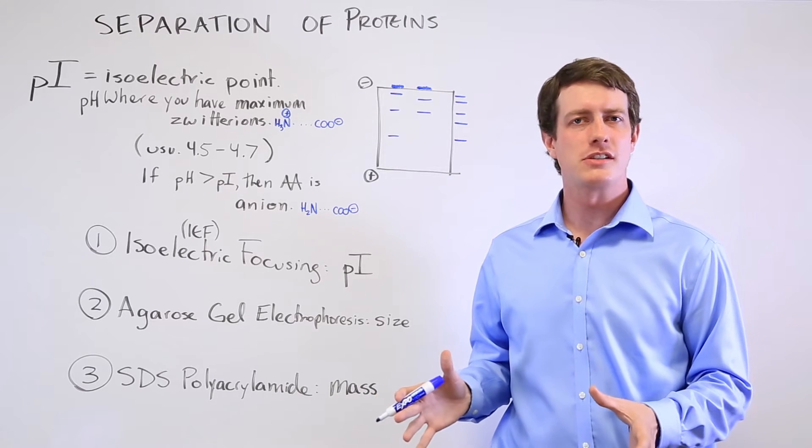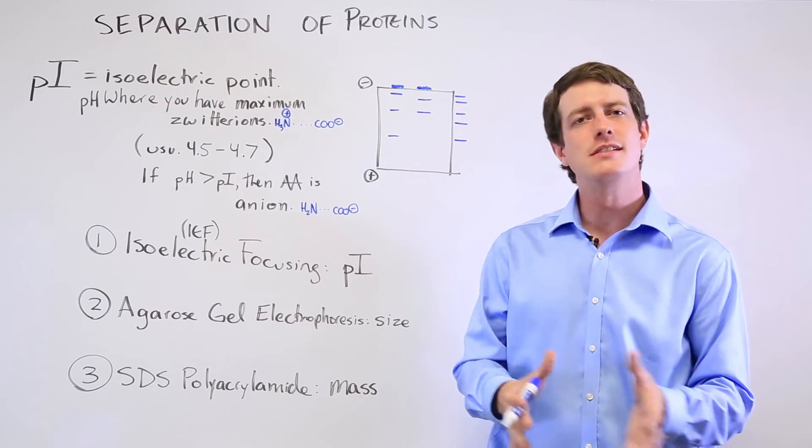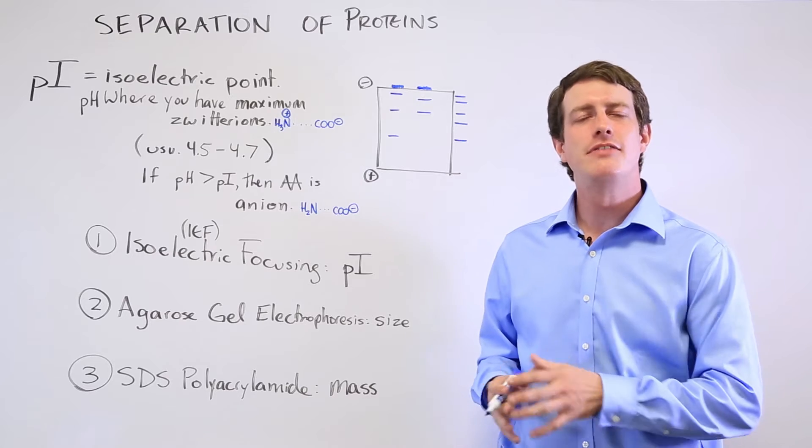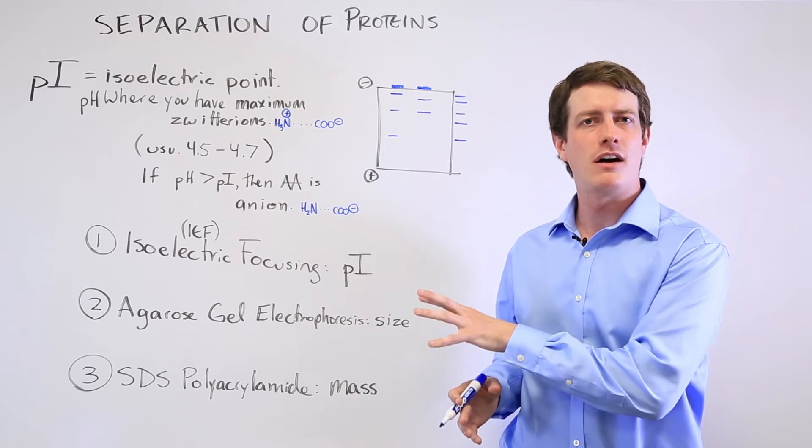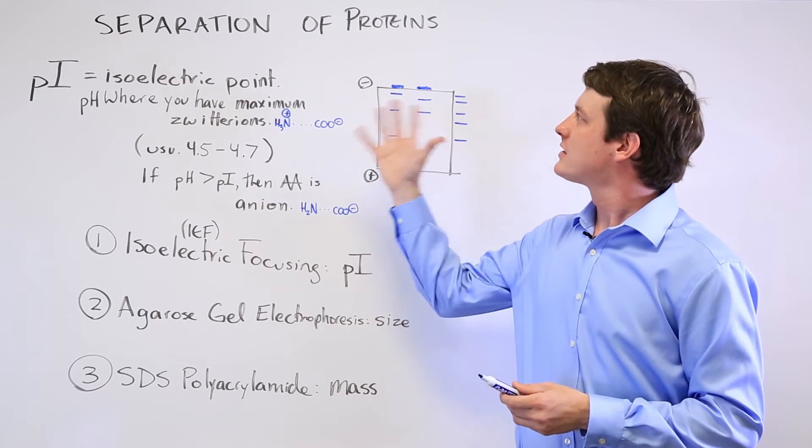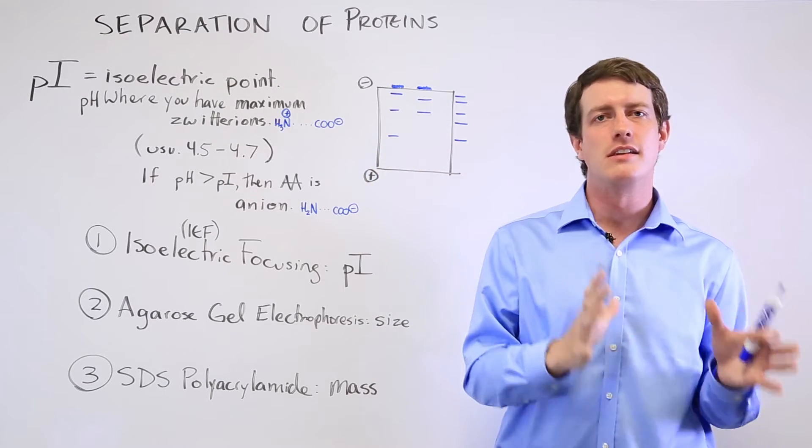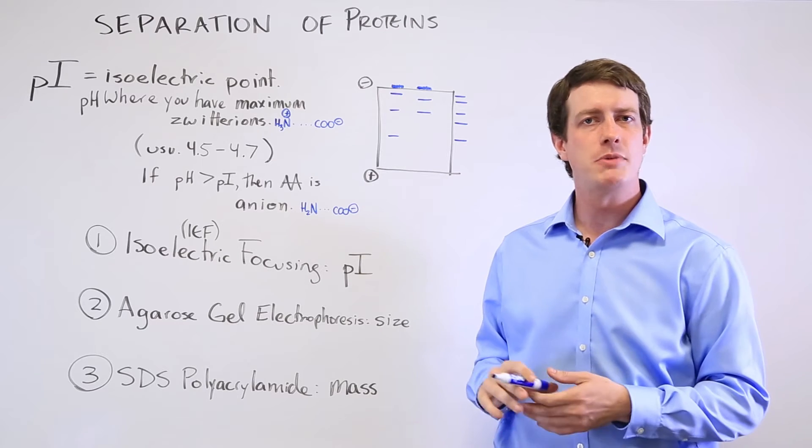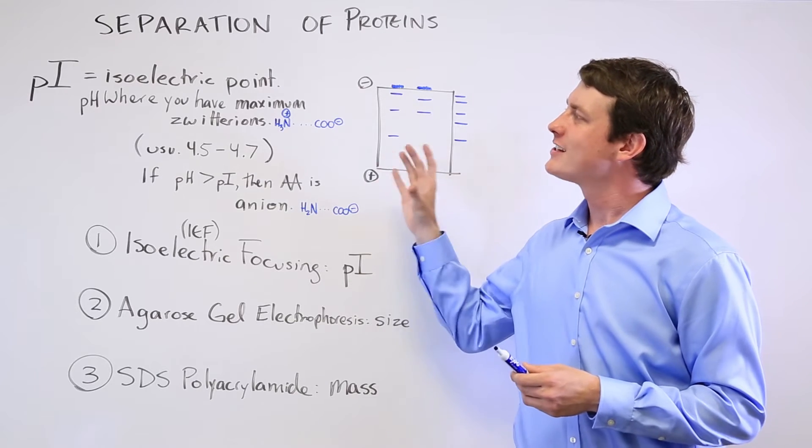Some of the more complicated questions you'll encounter that involve amino acids and proteins on the MCAT involve ways of separating them based on their physical and electrostatic qualities. This is about separating them and it ties in the physics with the biomolecular structure.